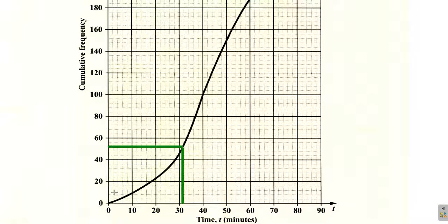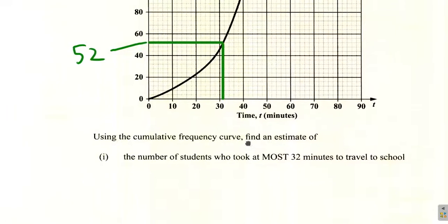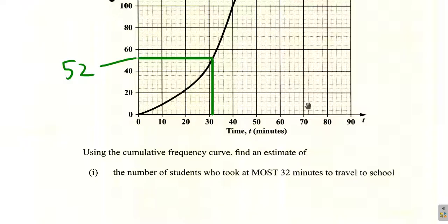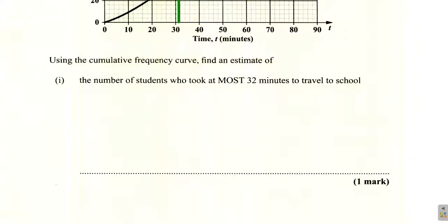Counting: 4, 8, 12, 16, 20. So you have 40, 44, 48, 52. It looks like it touches this point here at 52. So an estimate of the number of students who took at most 32 minutes to travel to school is 52.